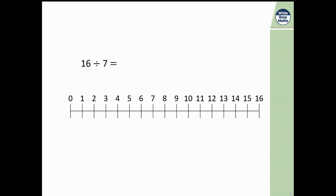Let's have a look here. So I've got 16 divided by 7. Where am I going to land there? So I'm jumping back in steps of 7 and that's got me two big steps of 7, hasn't it? So 16 divided by 7 is going to be 2 remainder 2, as I have landed on the 2.